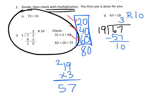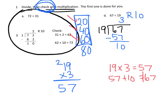Now because they want us to check, it says check with multiplication. So what we're going to do is 19 times 3 which equals 57, and then 57 plus 10 which is our remainder equals 67. Because 67 matches our dividend, that tells us we're probably correct and the answer is 3 remainder 10.